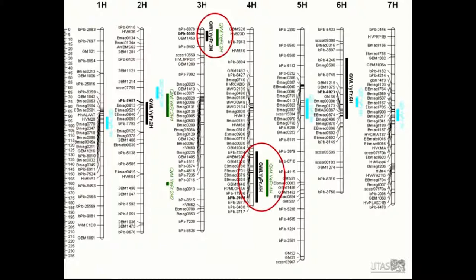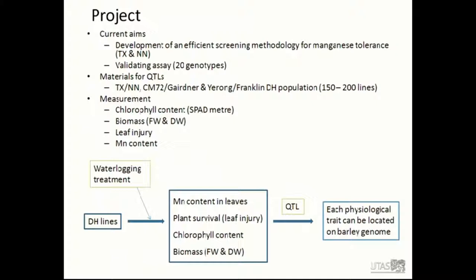Now turning to my project. My current work is to develop an efficient screening methodology for manganese tolerance on TX and natural needle varieties, to be used in pre-experiments, and to collect informative results for measurements including color review, quantitative biomass, leaf injury, and manganese content. Then I will select DH lines from the same parents and treat them under waterlogging conditions, using QTL mapping tools to locate each physiological trait in the barley genome. All results from my previous and current experiments can possibly be considered as the base for my following experiments.